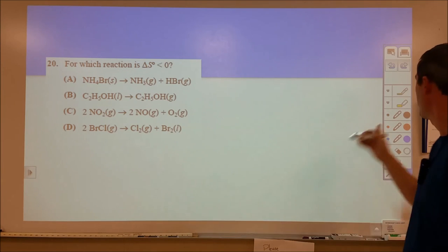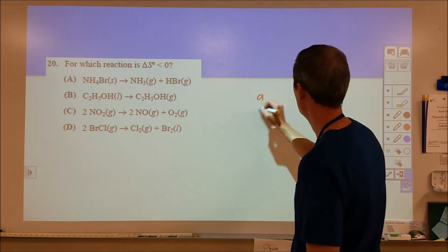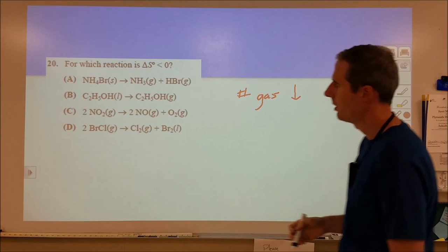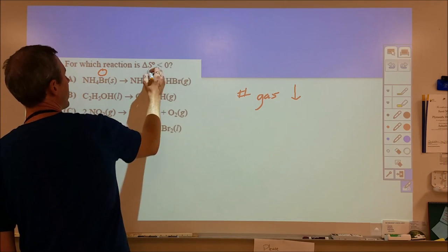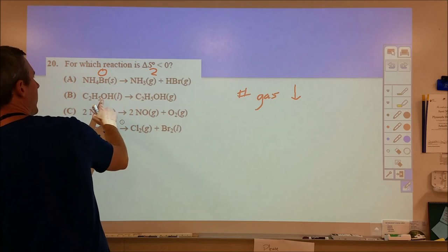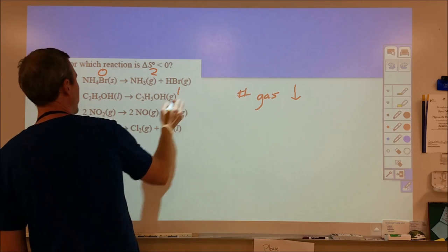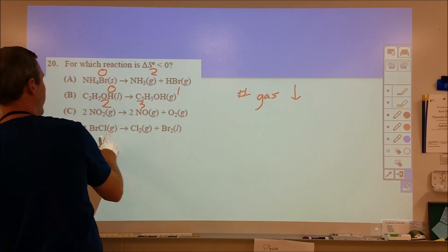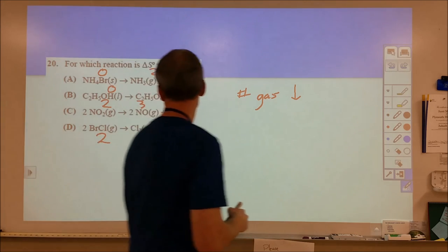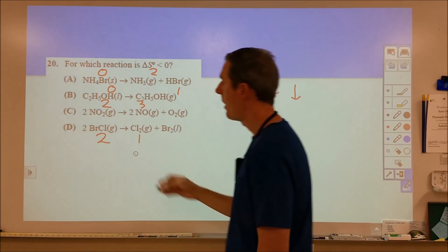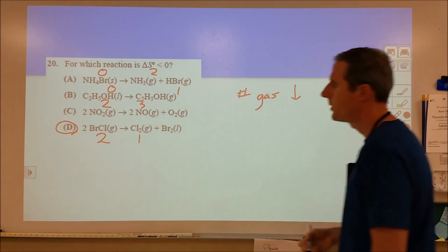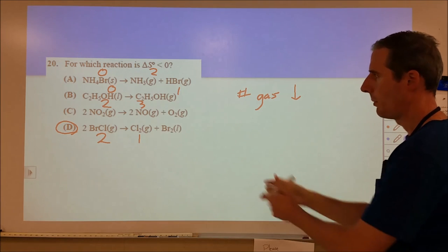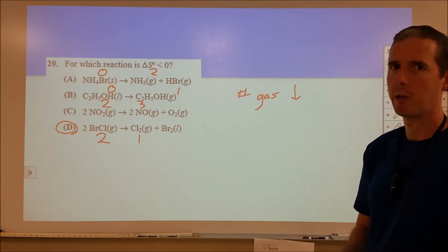And on to 20. Also a pretty simple question for entropy going down. We're looking for the number of gas molecules decrease in the reaction. So, here we start with zero. We end with two. So, it's going up. Here we start with a liquid. We end up with one. Here we start with two and end with three. And then here we start with two and end with one. So, D is our best option. Now, if all of these had been liquids into liquids or no change in gas molecules, we could have done a deeper analysis. But we don't need to at that point. 20's answer is D and we can move on with our lives.